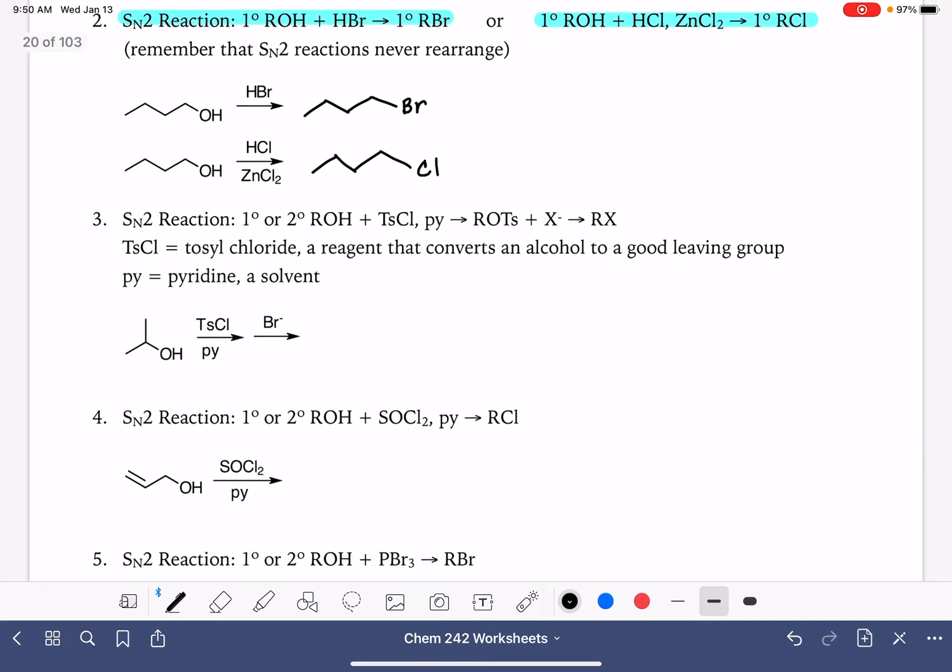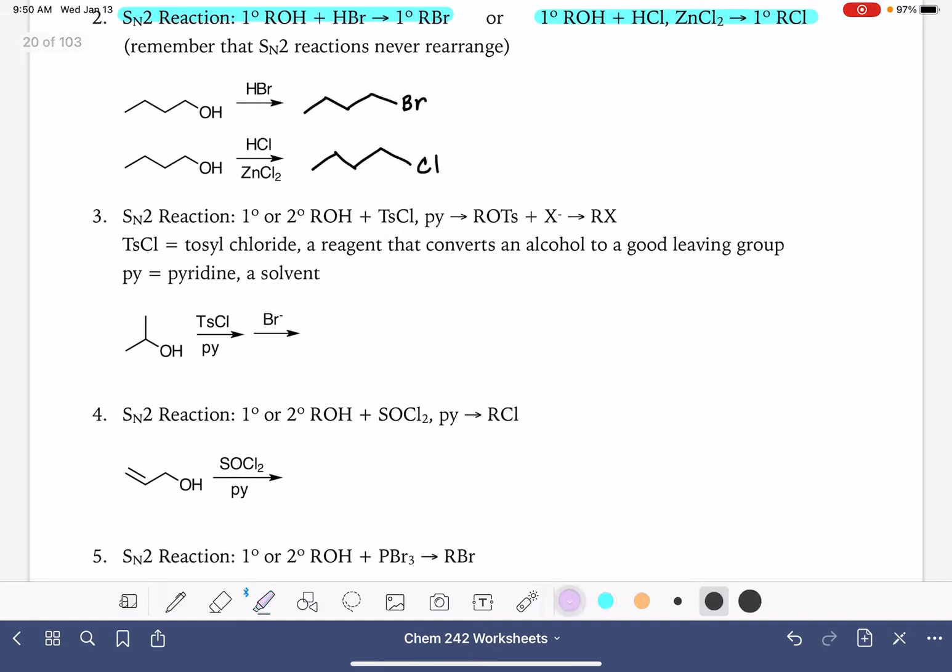Another option for an SN2 reaction is to convert the OH group on a primary or secondary alcohol into a tosylate group using TsCl. And then we can come along afterwards and react it with a halogen like bromide or chloride. Remember this TsCl reagent is just simply a reagent that converts alcohol into a good leaving group. Pyridine is the solvent that's used for this. So we want to kind of look at this in a couple of steps. The first step, the TsCl reagent, just simply converts the alcohol into OTs.